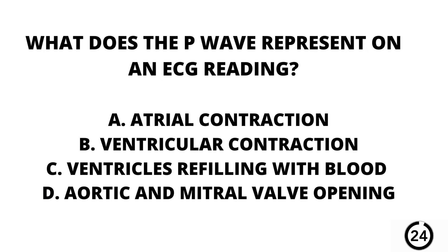Question number 22. What does the P wave represent on an EKG reading? A. Atrial contraction. B. Ventricular contraction. C. Ventricles refilling with blood. Or D. The aortic and mitral valves opening.